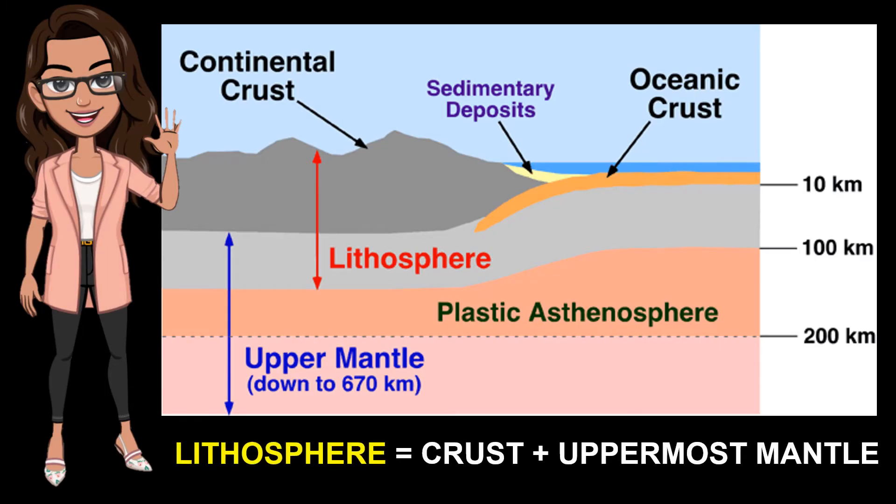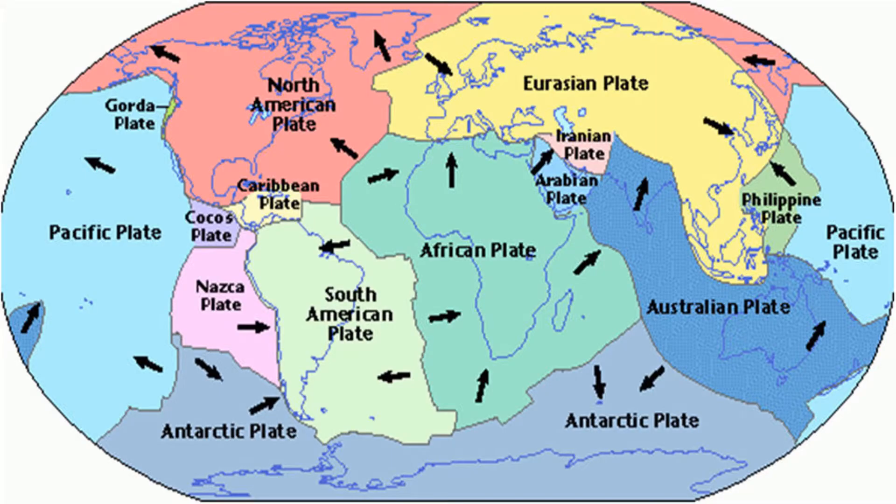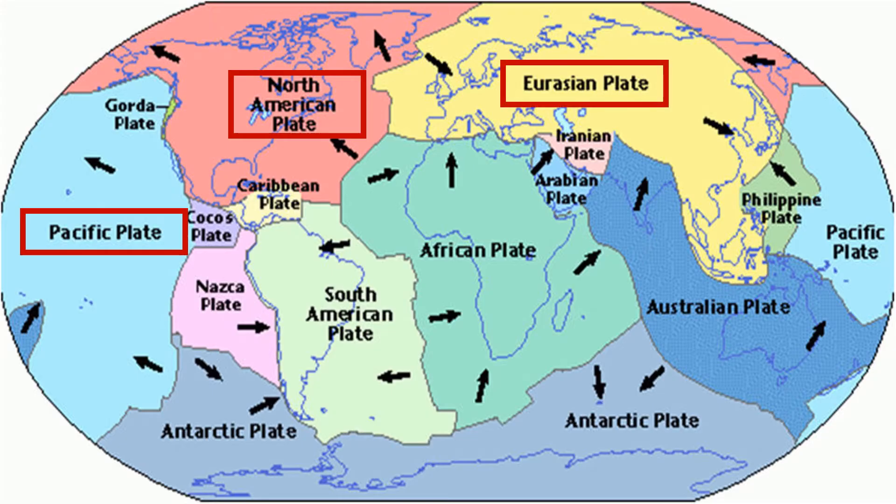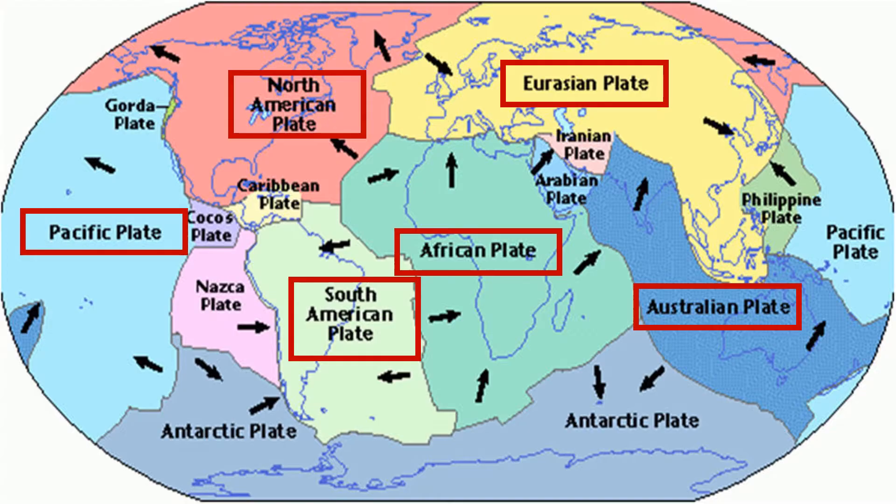The Earth's outer shell, the lithosphere, consisting of the crust and uppermost mantle, is divided into a patchwork of large tectonic plates that move slowly relative to each other. There are seven to eight major plates and many minor plates. The major plates are: Pacific Plate, North American Plate, Eurasian Plate, Australian Plate, African Plate, South American Plate, and Antarctic Plate.